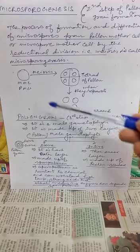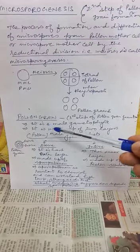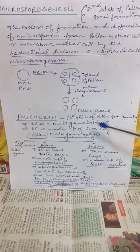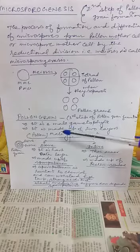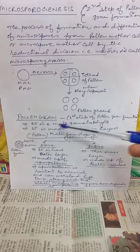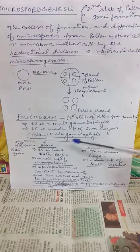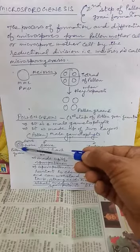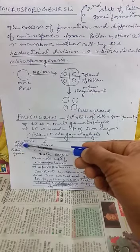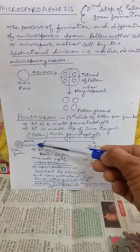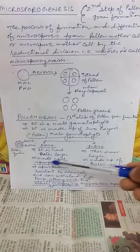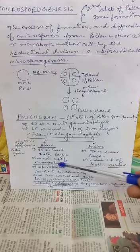The next topic is pollen grain, which is the third step of pollen grain formation. A pollen grain is a male gamete — it is a male gametophyte. It is made up of two layers. The outer layer is called exine and the inner layer is called intine.